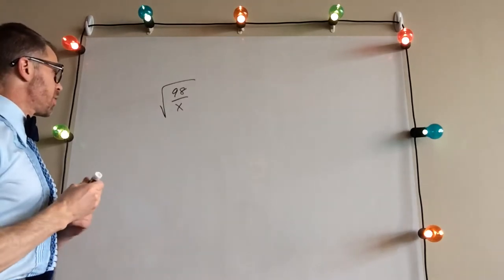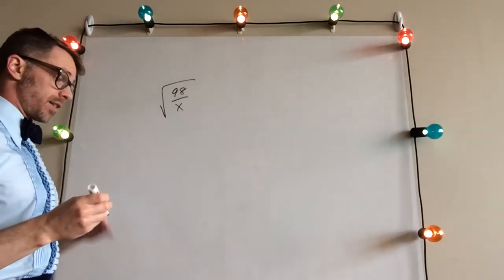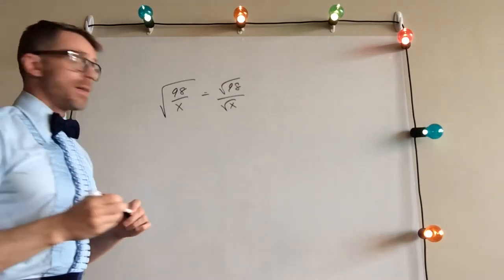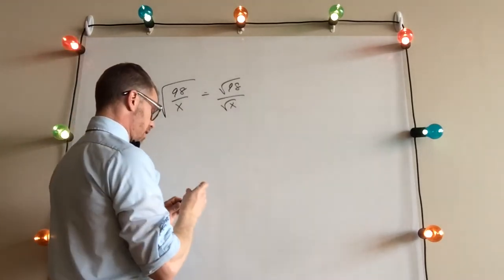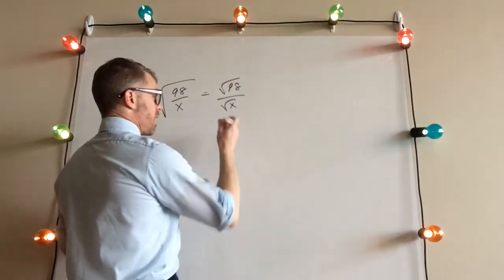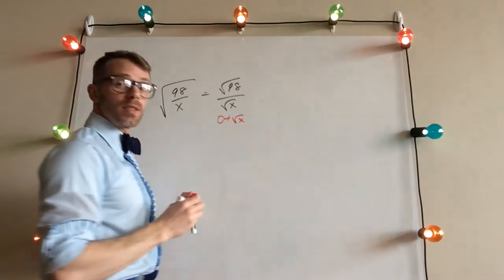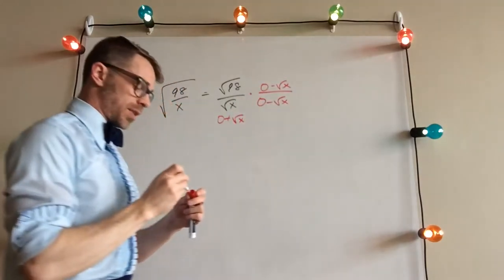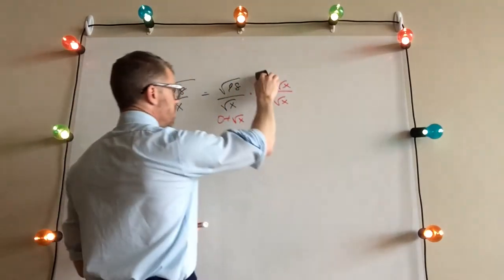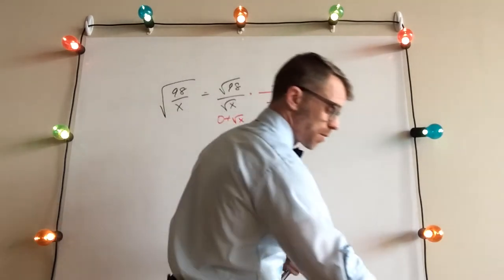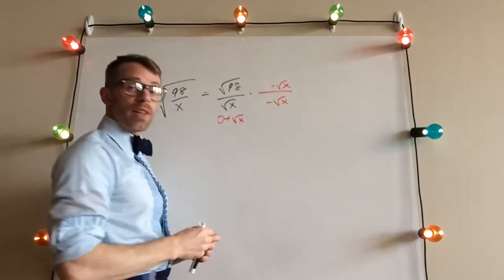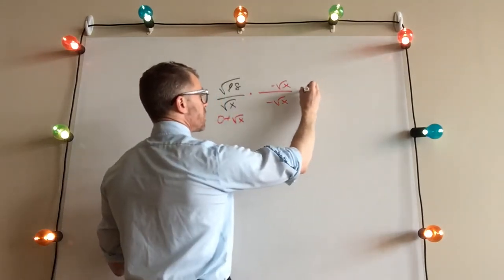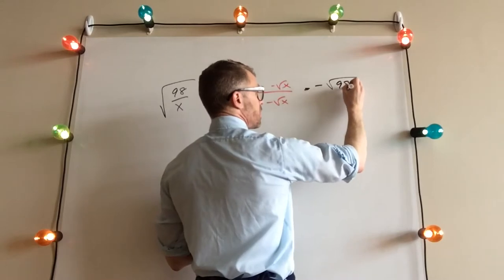Alright, with our next one — anytime you have a fraction inside an entire radical, the radical can go to the numerator and can go to the denominator. And again, we're not allowed to have that radical down low. You could think about this as 0 plus √x, so the conjugate would be 0 minus √x, which is just negative √x. So then we're going to do our multiplication: we'll have negative √(98x) in the numerator.